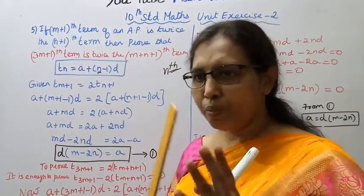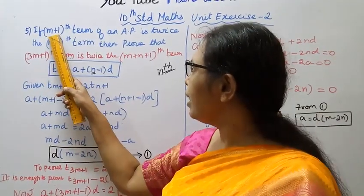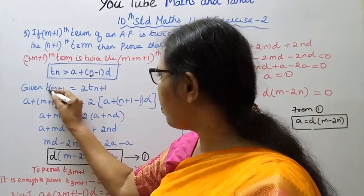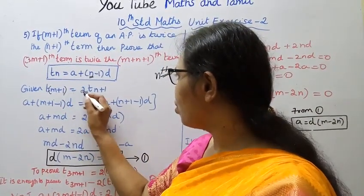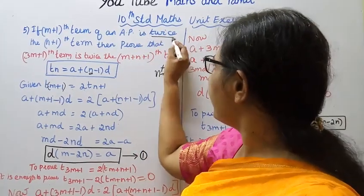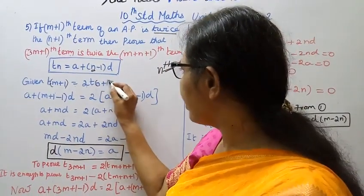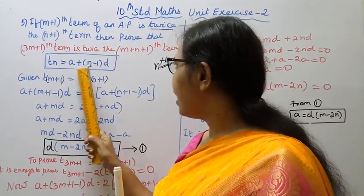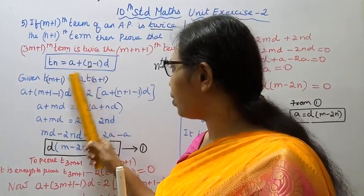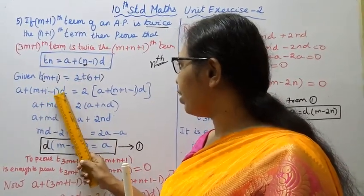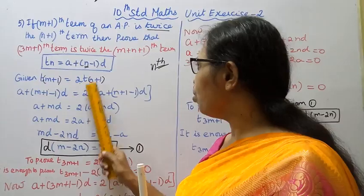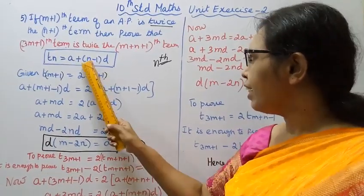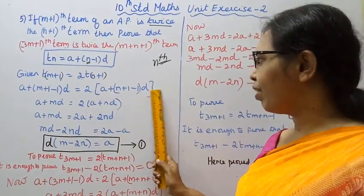I will prove this to you. Given: T(m+1) = 2 times T(n+1). Applying the formula: A plus M plus 1 minus 1 into D equal to 2 times A plus N plus 1 minus 1 into D.